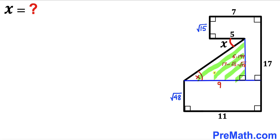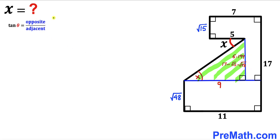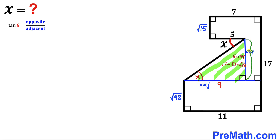Now let's focus on this right triangle whose side lengths are 9 and 6.199. Let's recall the trigonometric ratio: tangent of θ equals opposite side divided by adjacent side. In our case, the side length 9 is the adjacent and 6.199 is the opposite.